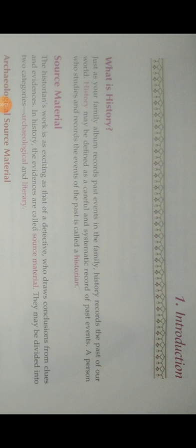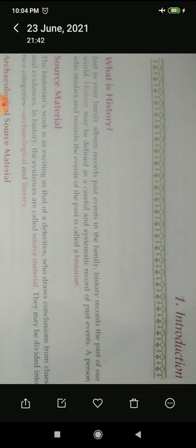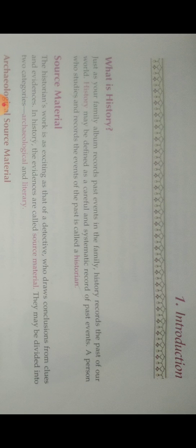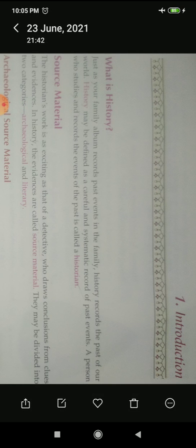Hello, dear students. In this class we are going to start with Lesson 1 — we are going to revise Lesson 1 for our exam. In this lesson we will discuss the definition of history and who is a historian, the important source materials that help us study history, such as archaeological sources and literary sources. Then we discussed about the early man and the life of early man, human achievements in the Stone Age, and the discovery of copper.